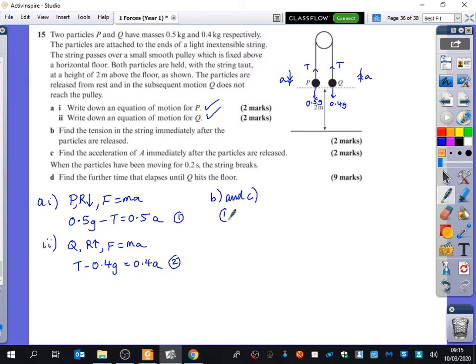So I'm going to add together equation 1 and 2. We figured that's often the best way of doing this. So I'll have 0.5G minus T plus T minus 0.4G. So the T's are going to cancel and we just get 0.5G minus 0.4G equals these two bits added together, which is 0.9A. So that becomes 0.1G divided by 0.9 is equal to A. So A is a ninth G.